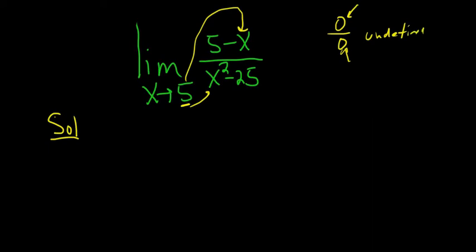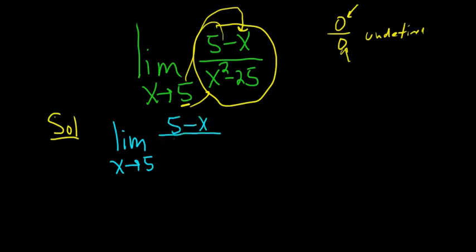What you want to do then is rewrite this so that you can plug in 5. So we have limit as x approaches 5. It's really important to always write the limit sign until you rewrite things. 5 minus x, and then on the bottom, it's the difference of squares: x minus 5 times x plus 5.